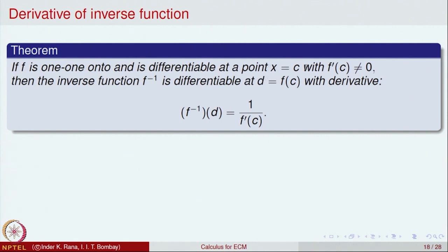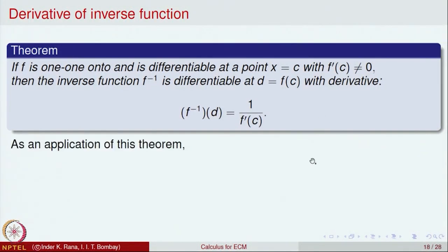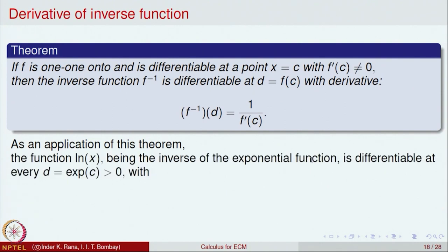f was differentiable at the point c, and its image is f(c), which we denote by d. The inverse function is differentiable at the point d = f(c) and its derivative at d is 1 over the derivative of f at the point c. This is saying the derivative of the inverse is 1 over the derivative of the function, provided the function is differentiable and the derivative is not equal to 0. This is called the derivative of the inverse function theorem.